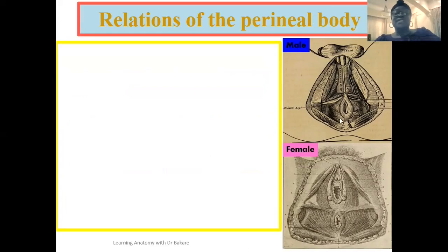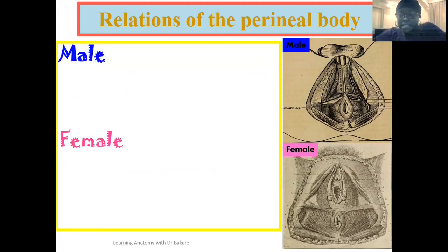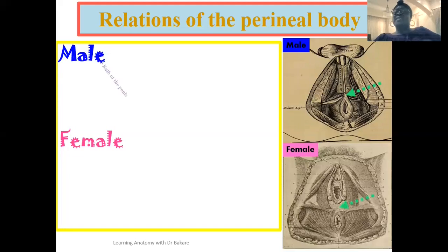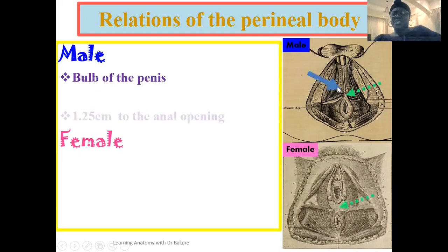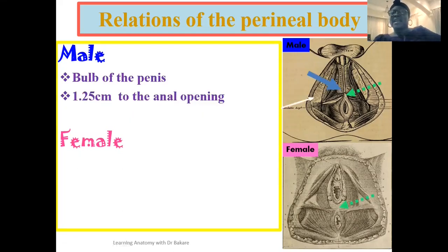Looking at the relations using two images — the superior one showing the male perineum and the inferior showing the female perineum — the perineal body is arrowed in dotted green in both. In the male, anteriorly you have the bulb of the penis, arrowed in blue, which is the central bulb-like mass at the root of the penis. Posteriorly, you have the anal opening, arrowed in white, about 1.25 cm from the perineal body.